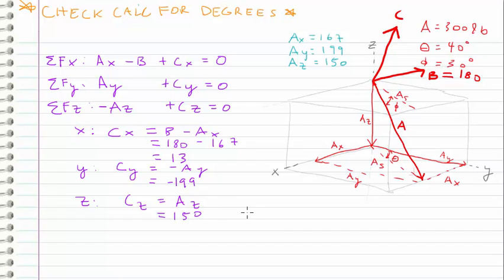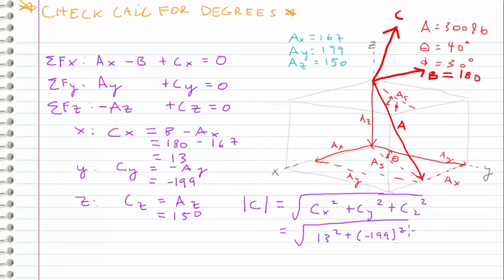When you have the components of a vector, we can use Pythagorean's theorem to find the magnitude. Well, on the 3D plane, it's no different, you just have an extra component. And so we can find the magnitude of C by taking the square root of each of the components squared. So CX squared plus CY squared plus CZ squared, which is equal to the square root of 13 squared plus negative 199 squared plus 150 squared. Plugging in the calculator gives us a total force of 250 pounds.